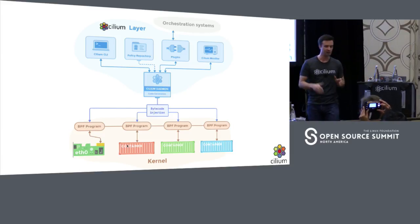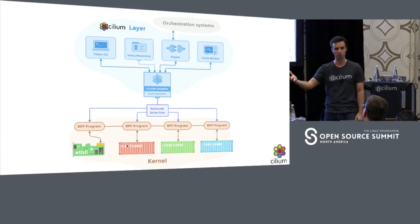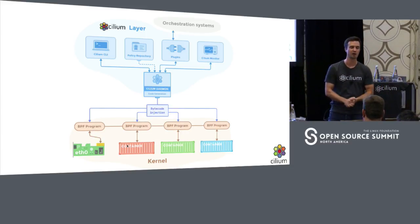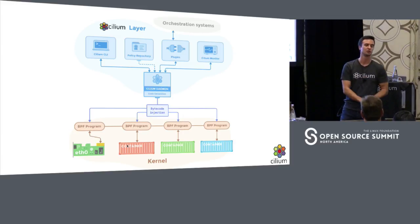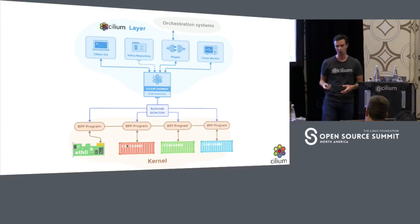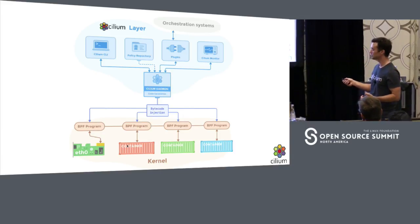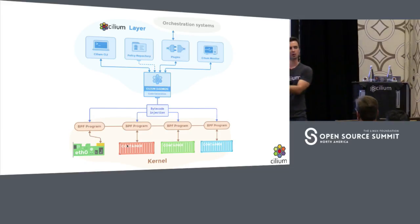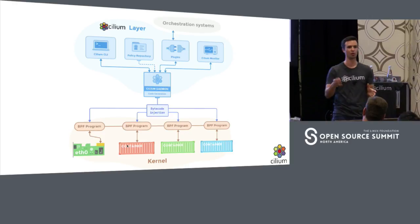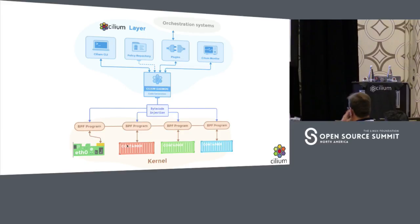Let me talk you through what the demo would have shown you. It would have shown that we can import a Layer 3 policy and Layer 4 policy to have containers or pods talk to each other. We also support importing Layer 7 policies. Some of you may have seen at our booth how we used Layer 7 policy to secure communication at API call level. Cilium is all about BPF. Cilium runs as an agent on all of your servers — in the Kubernetes case, deployed as a pod (daemon) on all your servers. It generates BPF bytecode and injects it into the kernel.